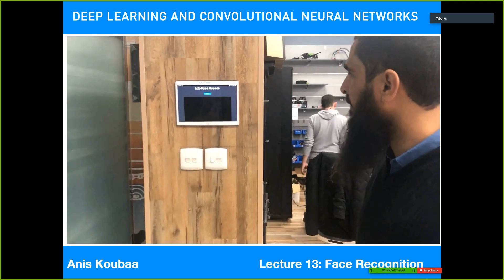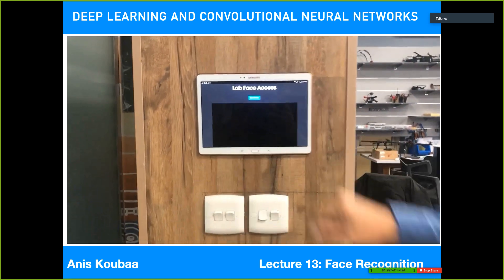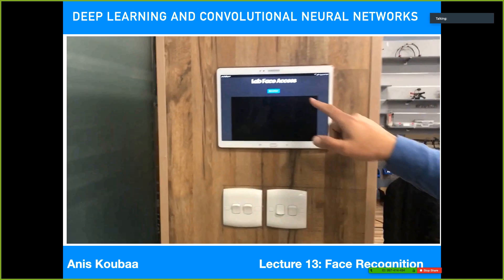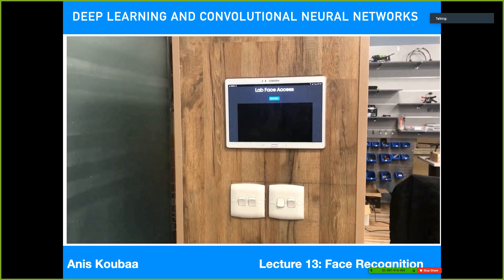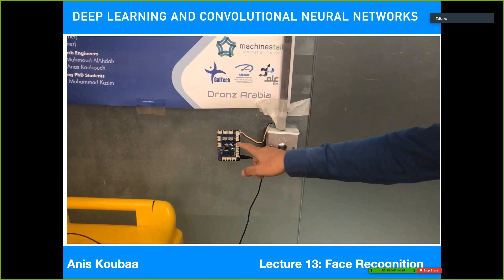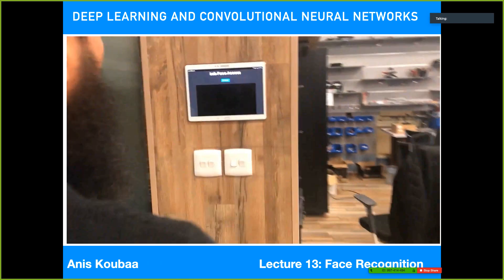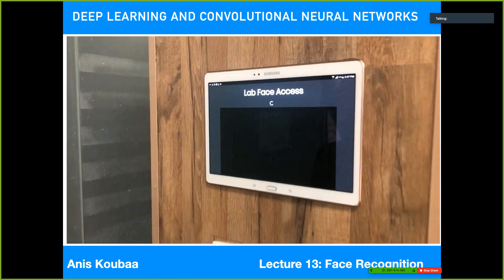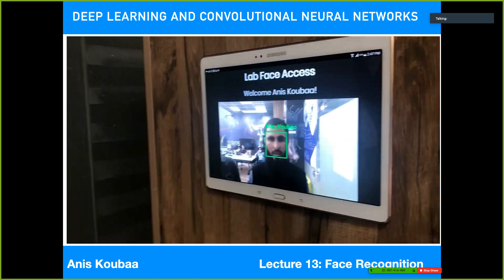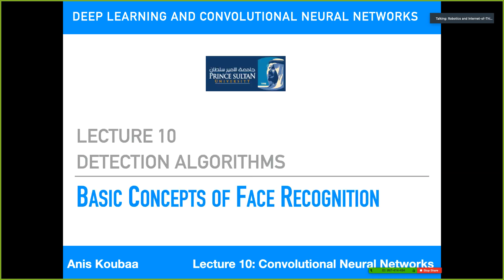We are presenting our face recognition lab access system. We have a smart tablet with a web application that takes a picture of a person, sends it to a cloud GPU server for processing, and if the person is authenticated, it sends a signal to a Raspberry Pi connected to the door switch. Now if it recognizes me, I'm able to open the door. This demo was developed by Anas Mahmoud and Esr al-Habashi for opening the Robotics and Internet of Things door using face recognition.